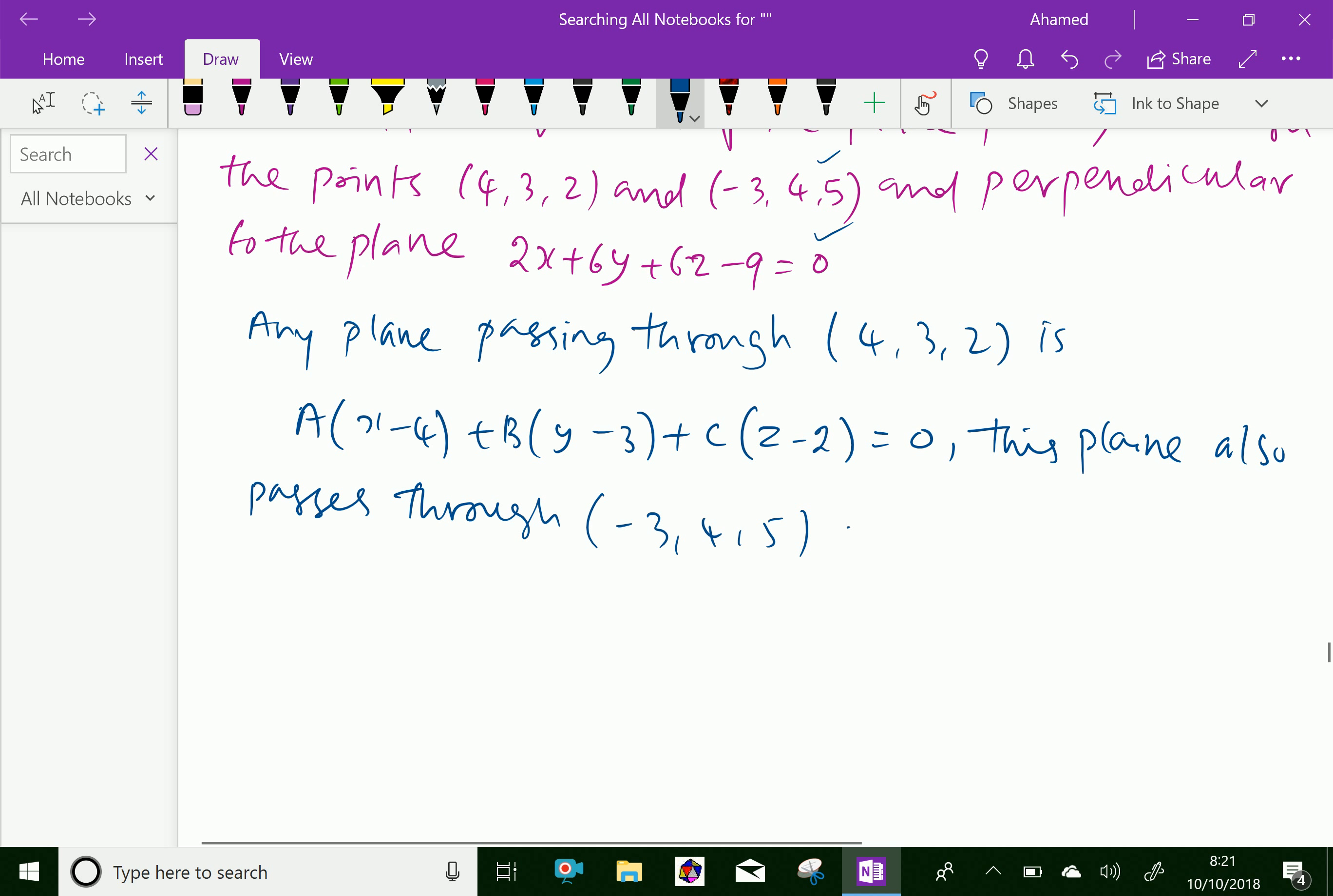Therefore substitute the values of x, y, z: A(-3 - 4) + B(4 - 3) + C(5 - 2) = 0.